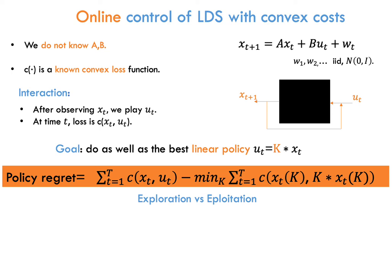So what is our goal? Our goal will be to do as well as the best linear policy, which applies controls given by a linear function of the current state. Formally, our objective is policy regret, which is our total cost minus the total cost paid by the best linear policy. Because we don't know the system, there is really an explore versus exploit trade-off here.